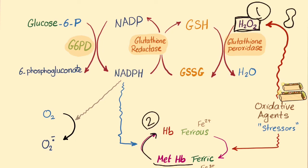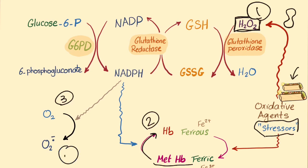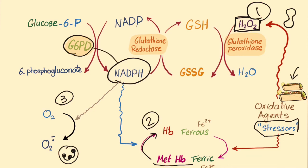In this case, the oxidative stressor is falafel. The third purpose of NADPH is to convert oxygen into superoxide in your neutrophils, so they can fight infections. If there is no G6PD, there is no NADPH, and oxidative agents such as falafel go unchecked.